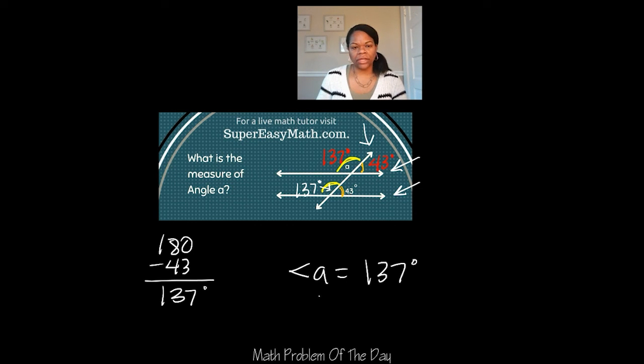So to answer the question, what does the measure of angle A equal? Angle A equals 137 degrees.